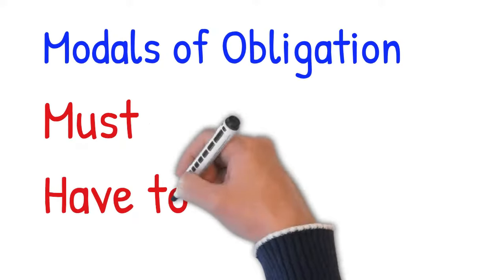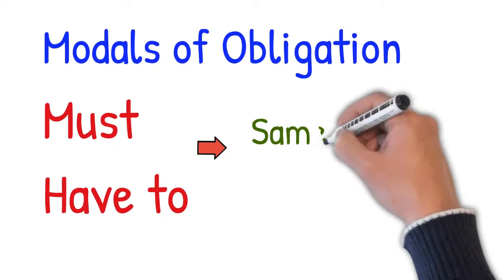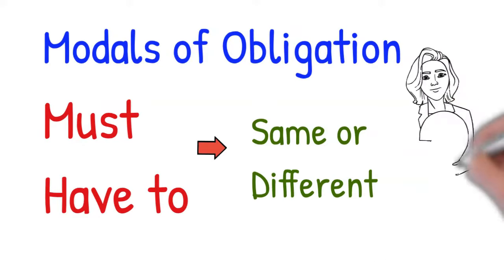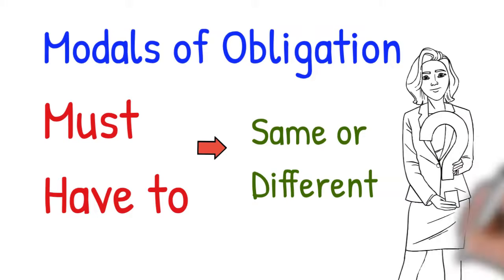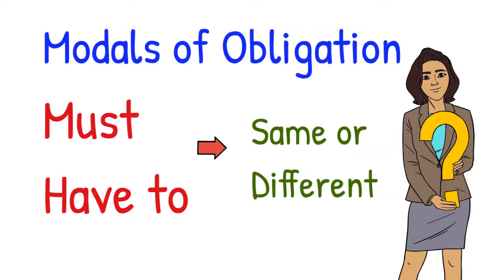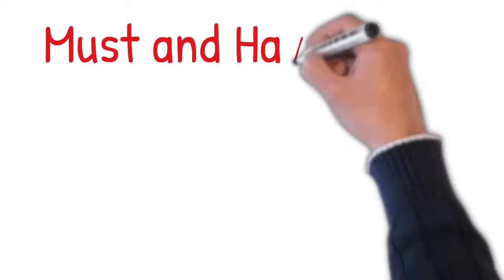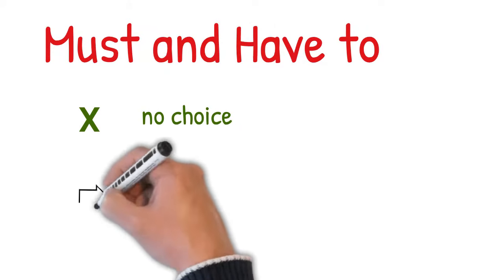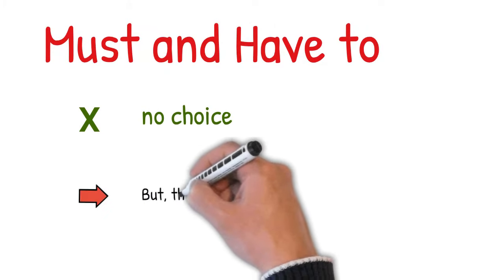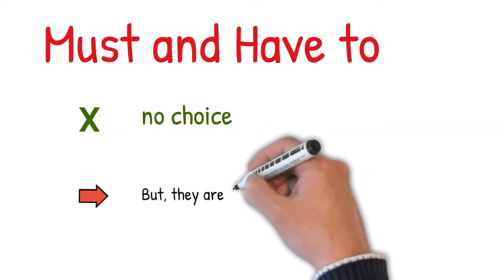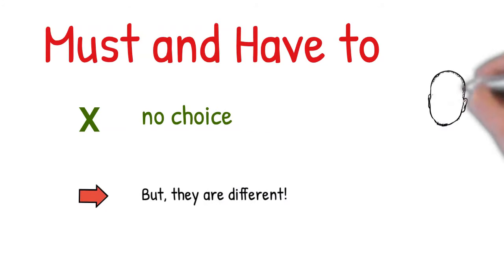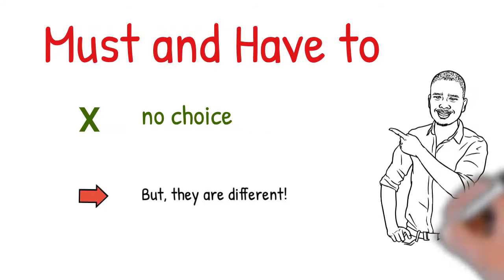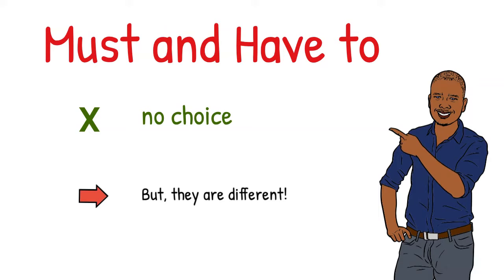In this English grammar video, we are looking at modals of obligation: must and have to. But are they the same or are they different? Both must and have to mean there's no choice. But they are different, so let's talk about how they are different in this video. Let's get right to it.